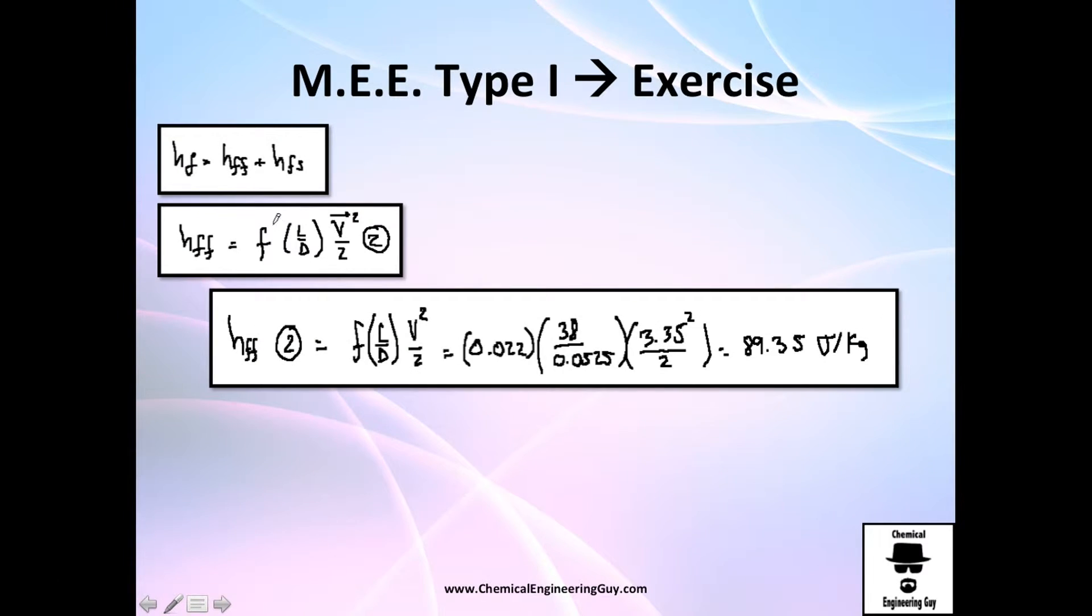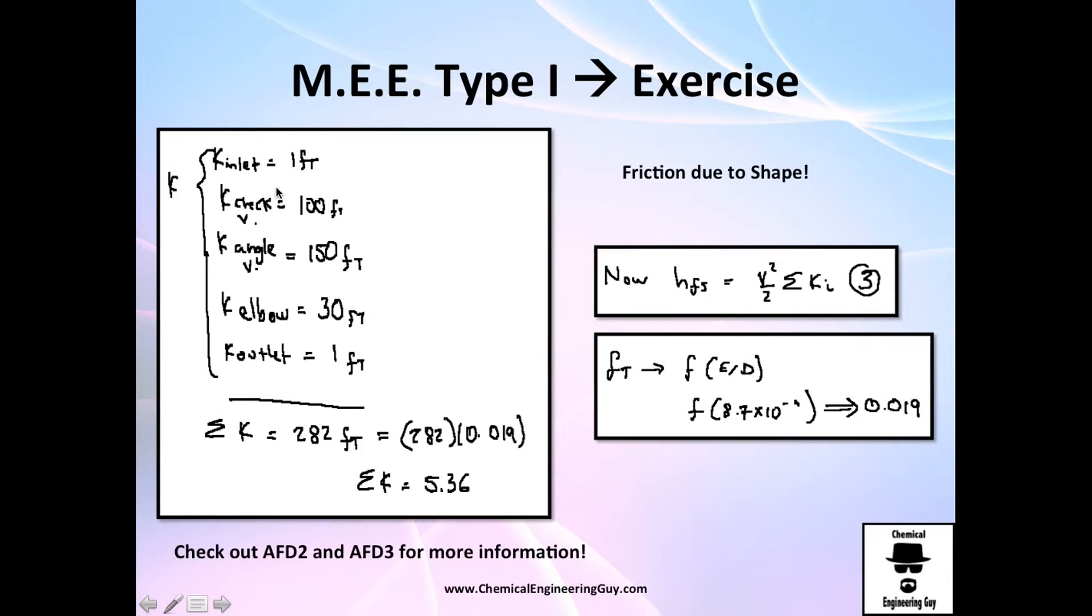Now that was only friction in the wall, I want to calculate the friction due to shape. So I have one inlet which is 1 FT, I have one check valve which is 100 FT, I got one angle valve which is 150 FT, I got one elbow which is 3 FT, and I got one outlet which is 1 FT.